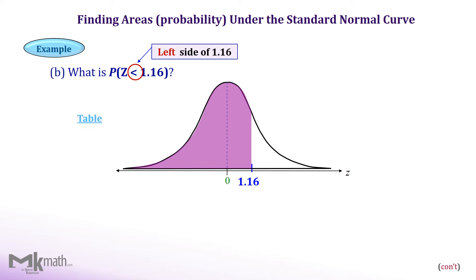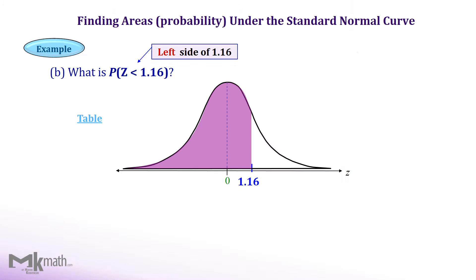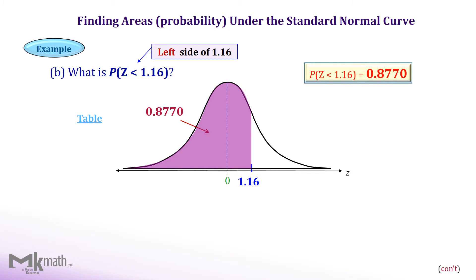Let's look up the z-table using 1.16. We need to find the left cumulative area to z equal 1.16. First, locate the first two digits of the z-score as 1.1, and then locate the second decimal place of 6 from the top row. The intersection of those values is the left cumulative area to z equal 1.16, which is 0.8770. So the area to the left of z equal 1.16 is 0.8770.